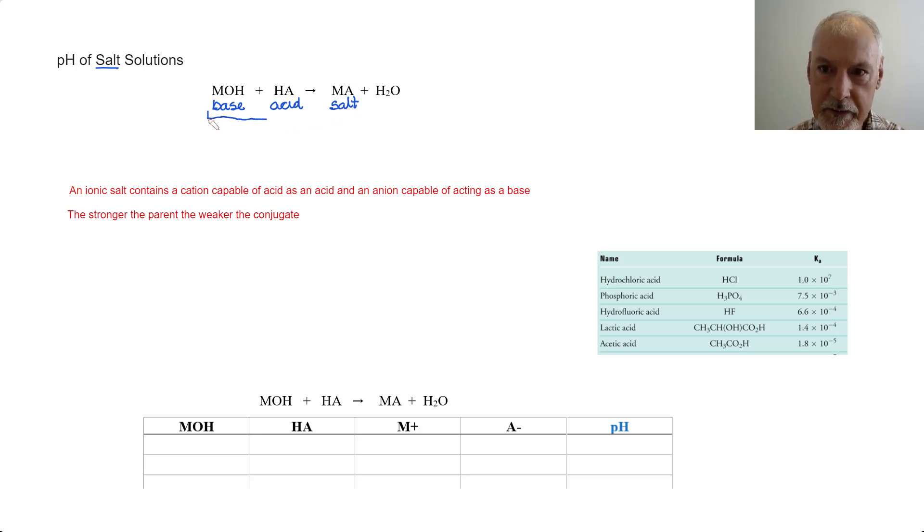I'm going to refer to these substances that created the salt as the parent base and the parent acid. The salt can be thought of as ionic in nature and has two parts: a positively charged cation and a negatively charged anion. That negatively charged anion is the conjugate base of that acid. In a similar fashion, this cation is the conjugate acid of this base.